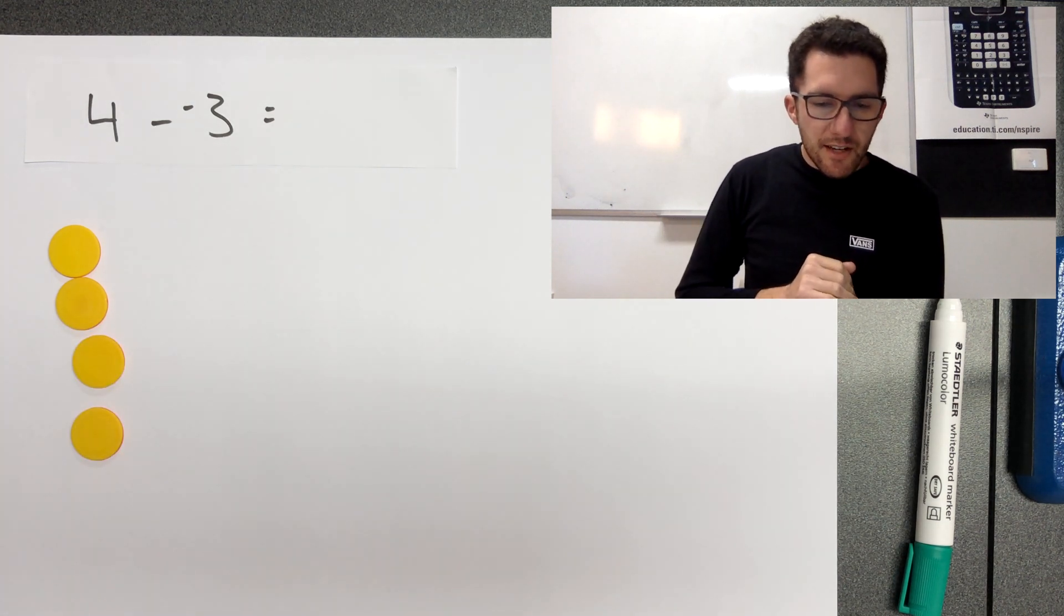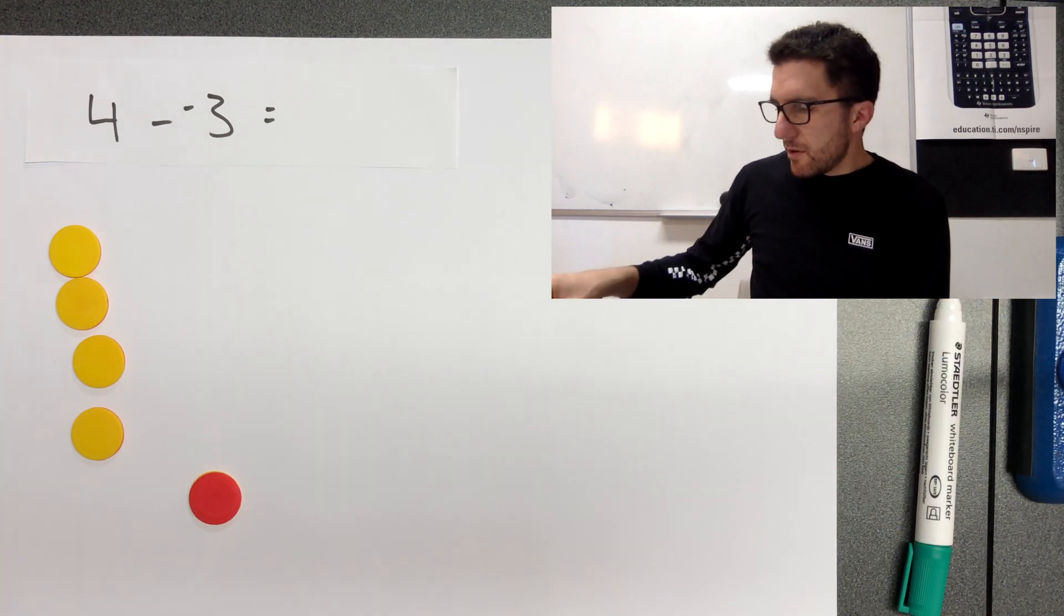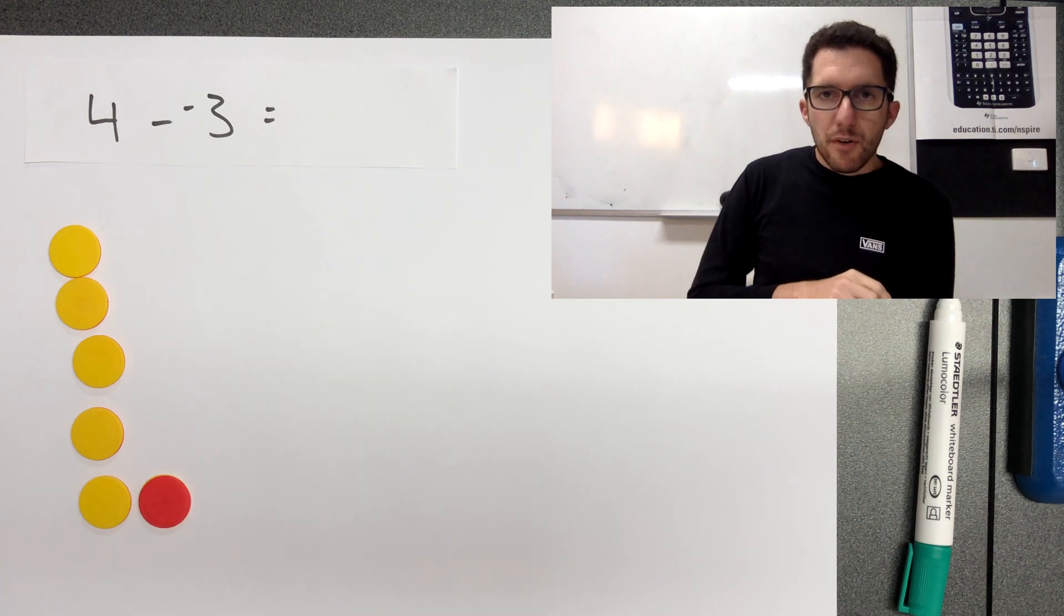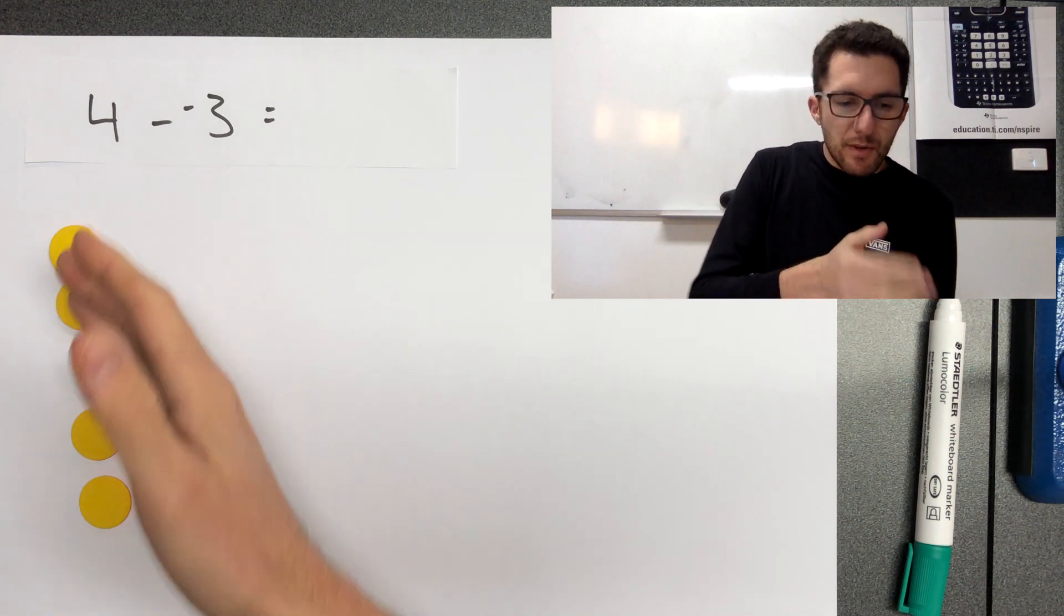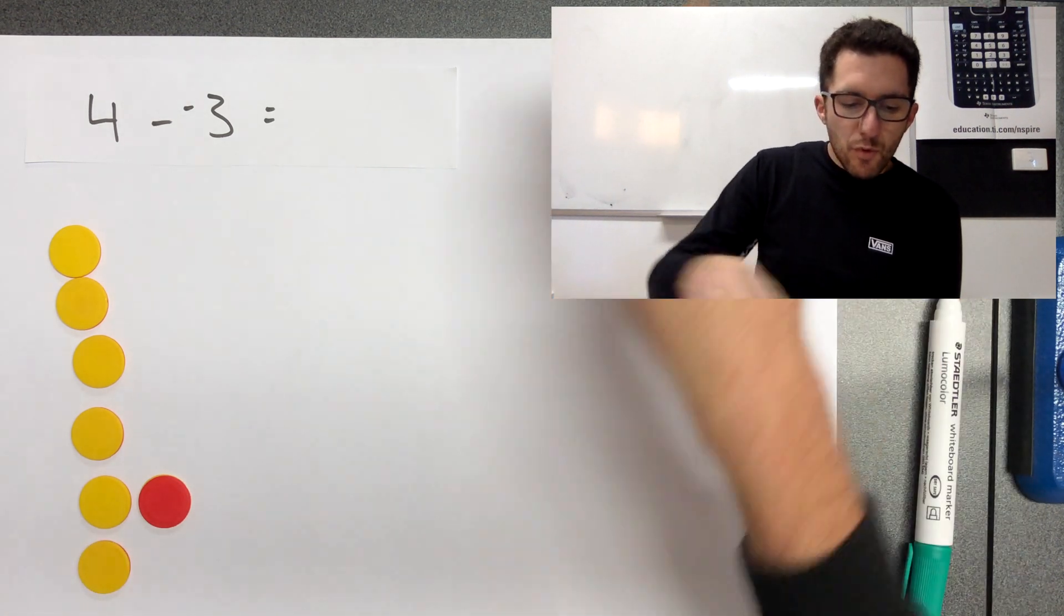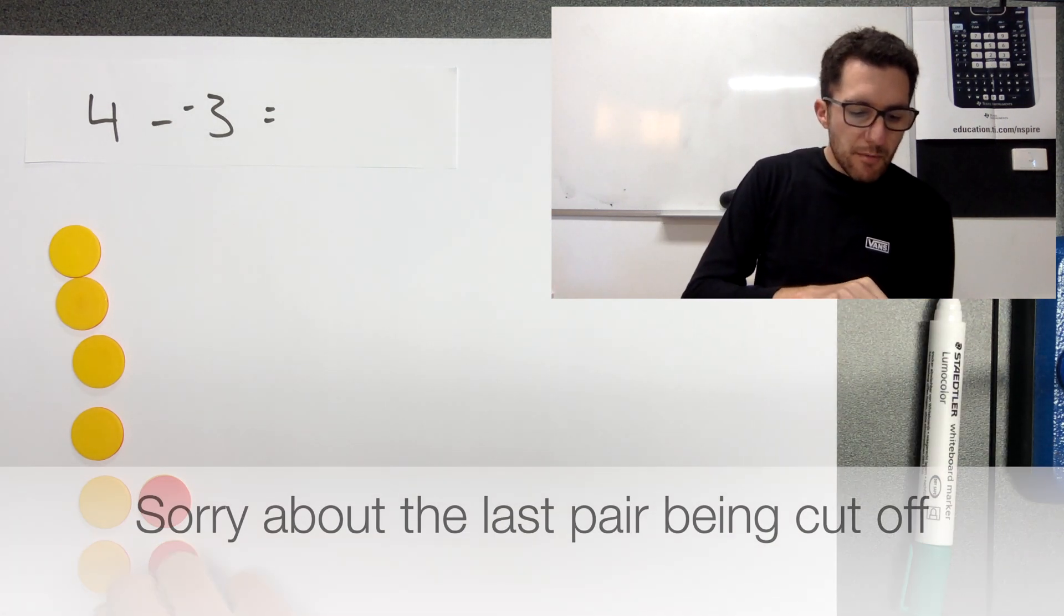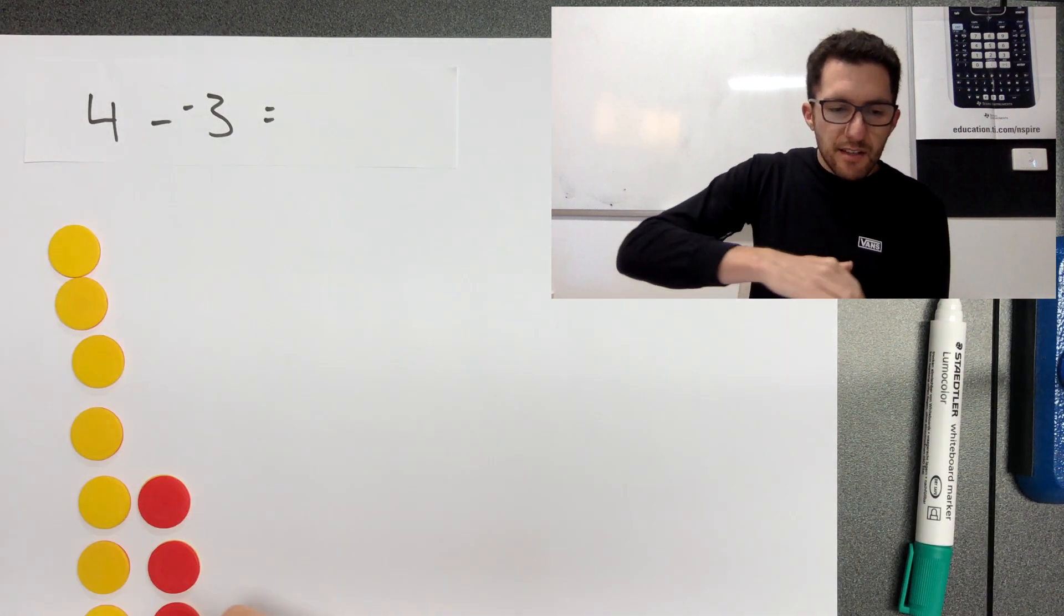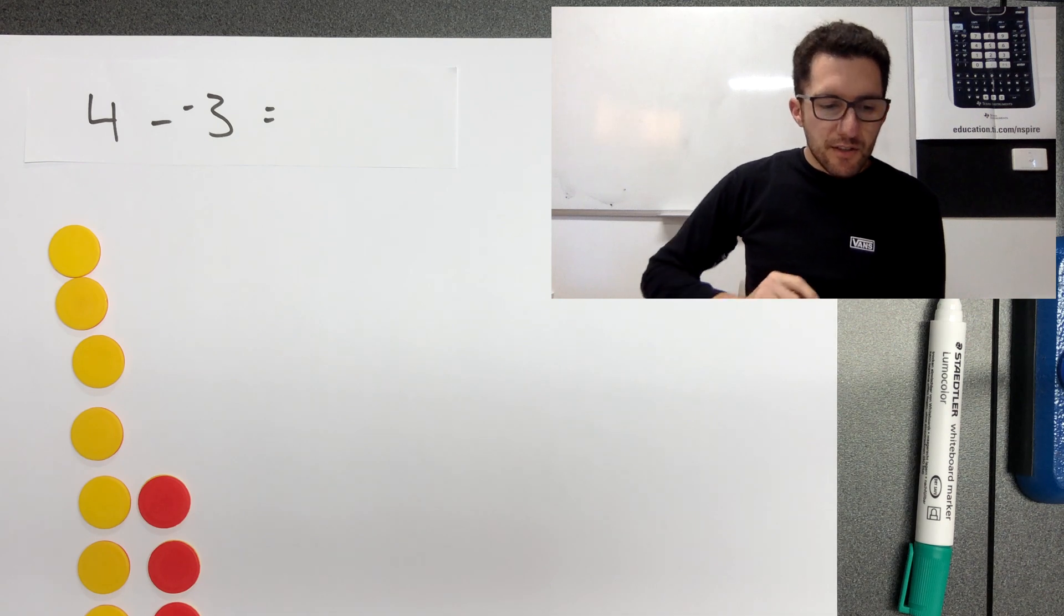Well, we can represent four like that, can't we? Or we could represent four like that, couldn't we? Because there's a zero pair. So that doesn't add any value to our number. And because we need a few more negatives for this problem, we're just going to add in a few more zero pairs. So this number here is still four. Do you agree with that? Let's check.